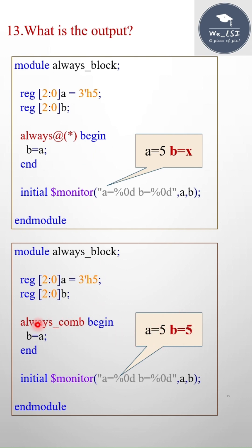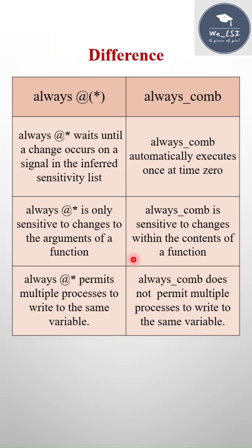This is why: because this always comb block will be executed at zero simulation time. This block will be evaluated at the zero simulation time automatically. That's why I am getting 5 for both variables, and this is the difference.